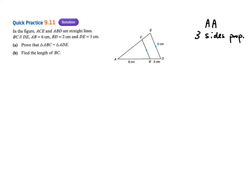The second reason is three sides proportional. SSS for congruence is also about three sides, but it's different. For similarity, SSS means the three sides are in proportion. The second is ratio of two sides including an angle — that's SAS similarity.